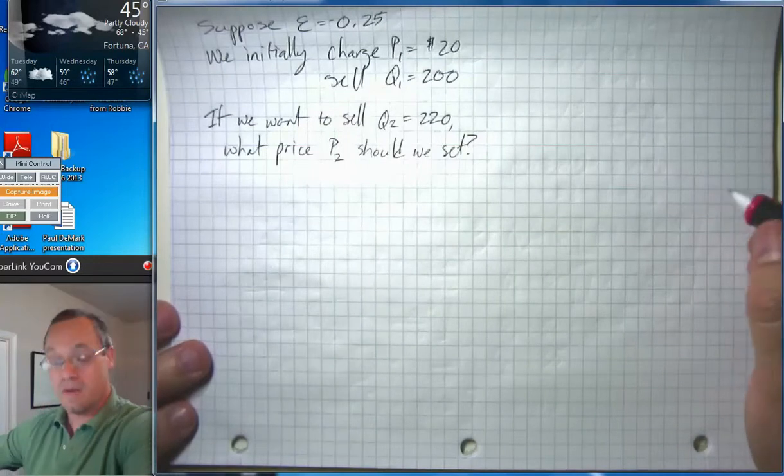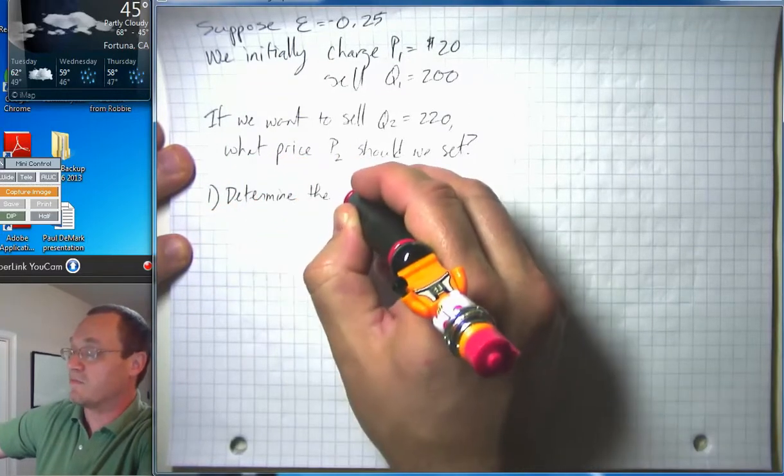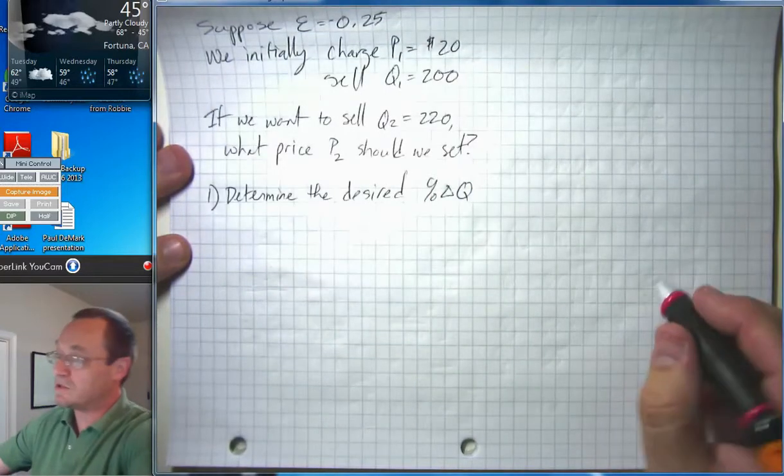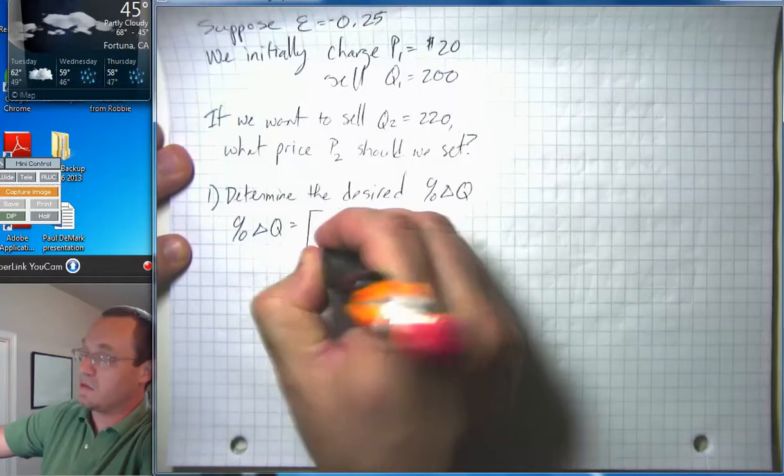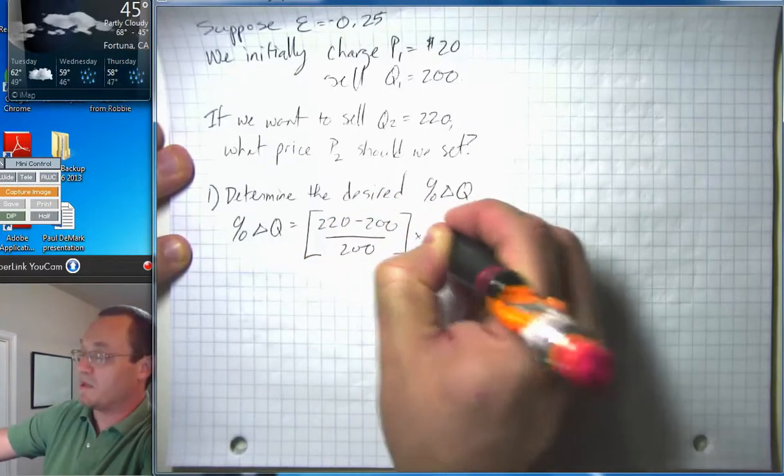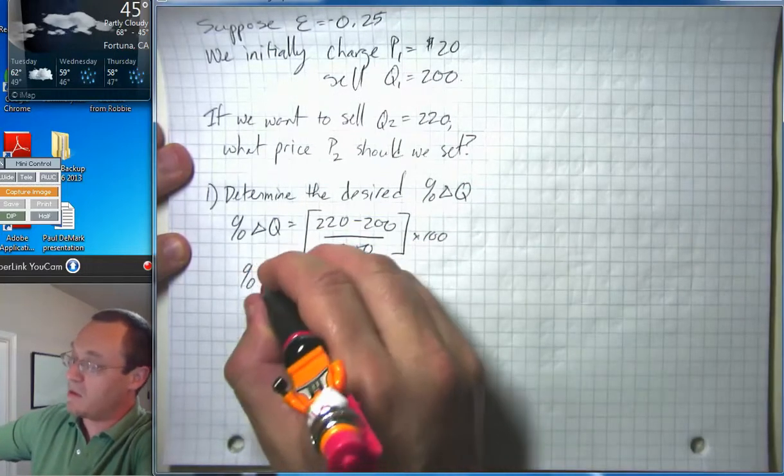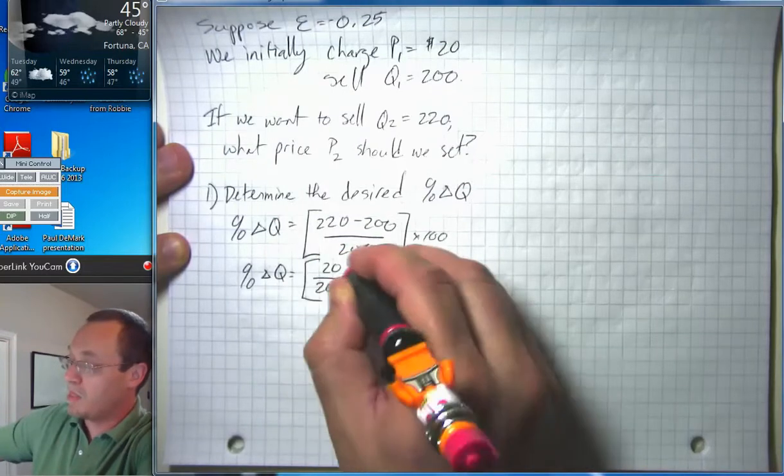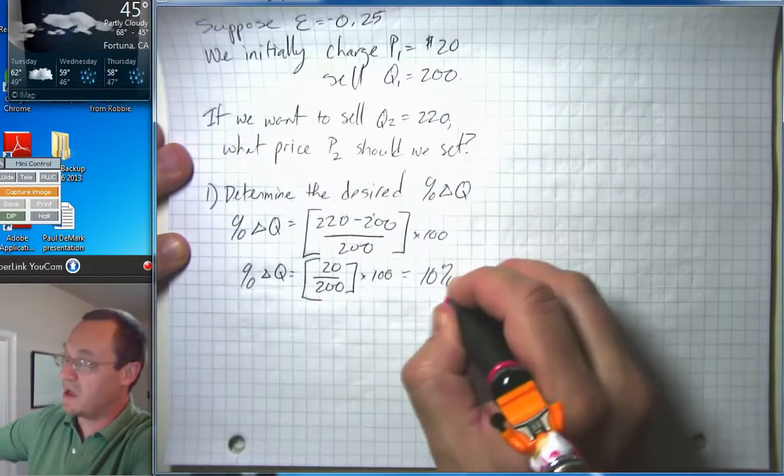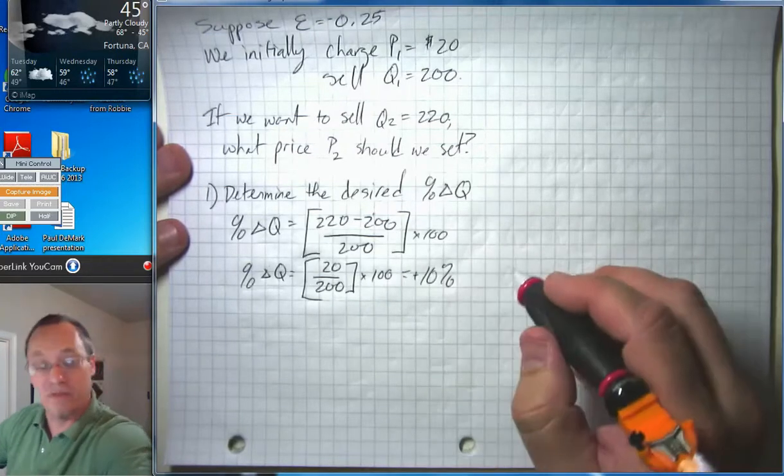So what are we going to do? Well, basically first we want to determine the desired or objective percent change in quantity. Our percent change in quantity is going to be the new quantity minus the old quantity over the old quantity, then times 100, because that's how we're going to compute a percentage change. And you might be able to eyeball this, but we're having a change of 20 on a basis of 200, which means we're going to have a 10 percent change. It's a positive 10 percent change because we had growth.